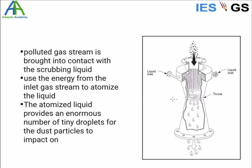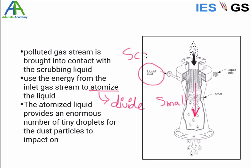A venturi device has a small cross-sectional area region called the throat. When fluid flow is constricted, its velocity increases. Using this property of increasing velocity, we atomize the liquid — that is, divide it into small droplets. This liquid is used as the scrubber, having chemical or physical properties to absorb gases and particulate matter. The liquid is passed to the throat, its velocity increases, it gets divided, and particulate matter gets absorbed into the droplets.